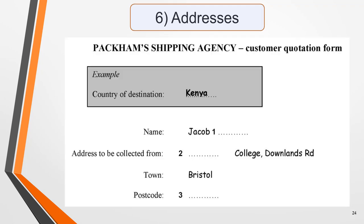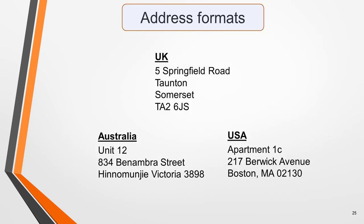If you get a form completion question, you'll probably have to write the details of an address. To do this successfully, you need to be familiar with address formats. Usually, the address will be in either a UK format or an Australian format — you might also get a US address, which is similar to an Australian one. Make sure that you can spell common words such as road, street, and avenue. Also note that postcodes are made up of letters and numbers, and that the letters are always written in capitals. They will be spelt out in the recording if required for an answer, so listen carefully.